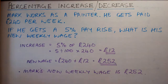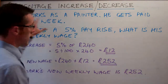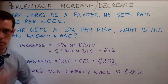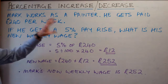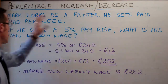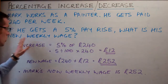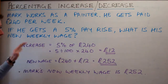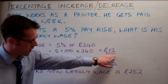Going through it again: the first step is to read the question very carefully and understand what's going on. Very often people just look at the numbers and try to do something with them — make sure you understand. Mark works as a painter, paid £240 per week, 5% pay rise — what is his new weekly wage? We work out the increase first: 5% of £240 gives us £12.